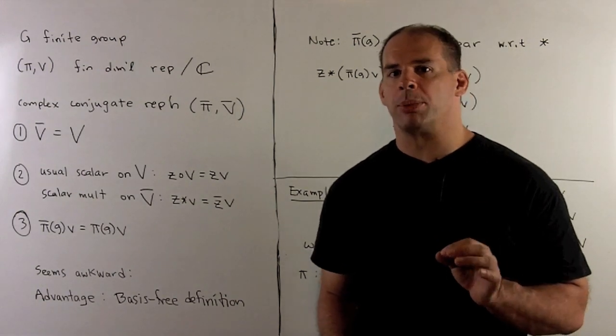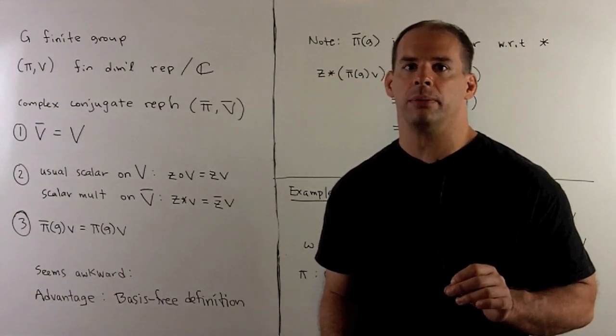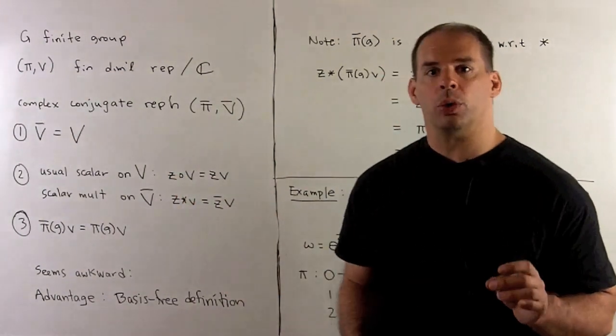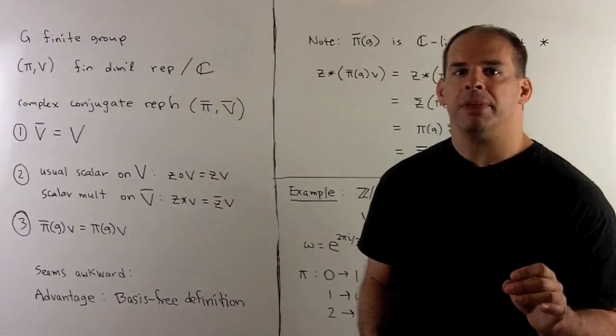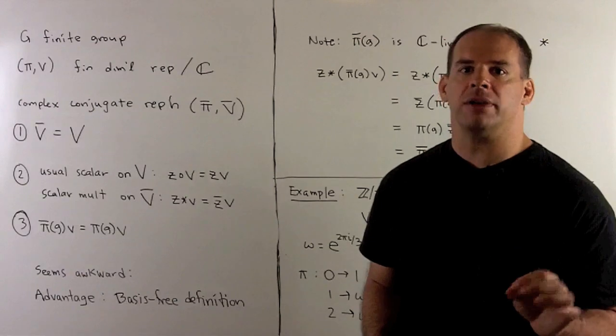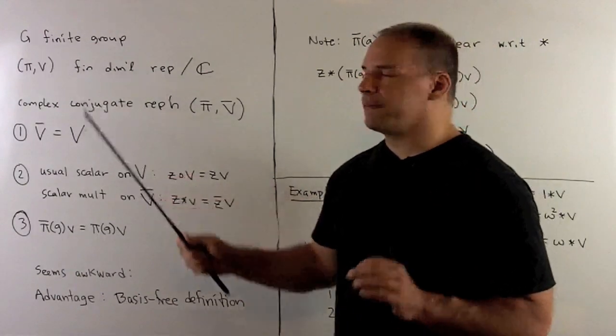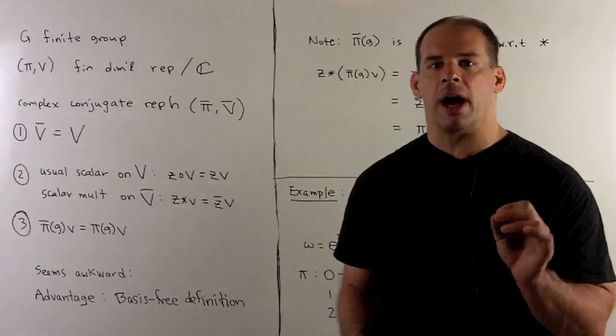Let's look at complex conjugate representations with more detail. Recall, G is a finite group. Pi V is a finite dimensional representation of G over C. So, V is a finite dimensional vector space over the complex numbers.